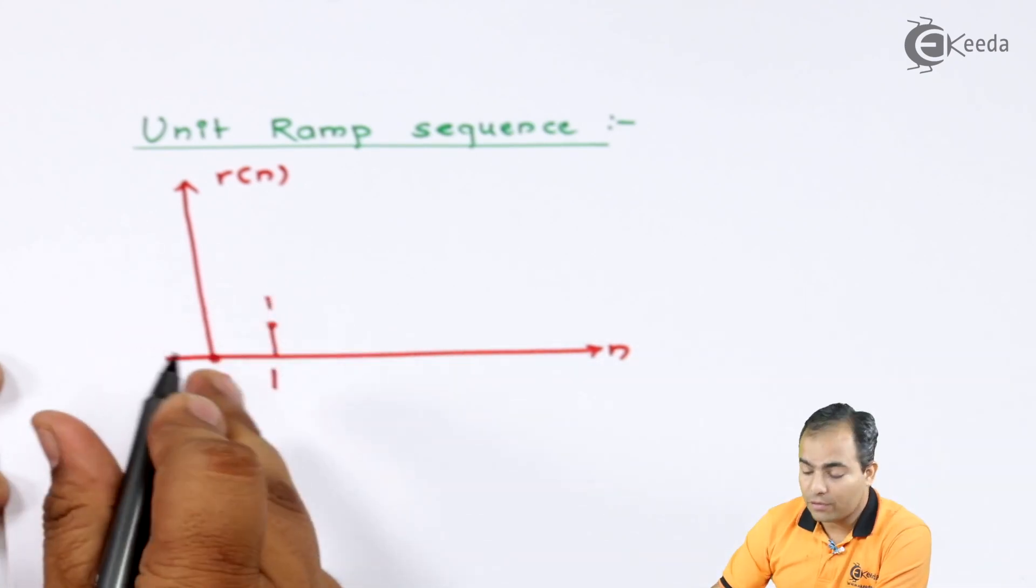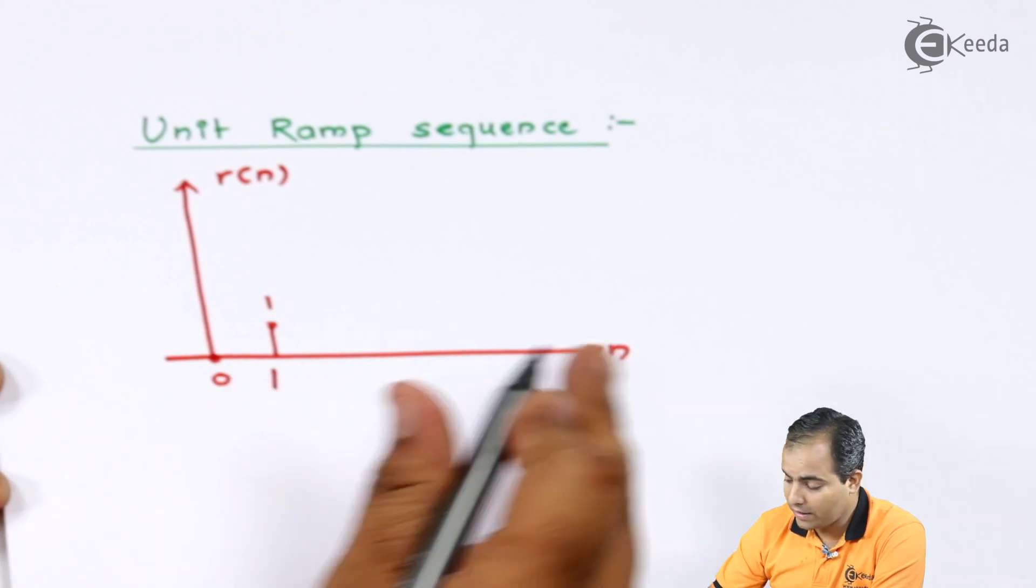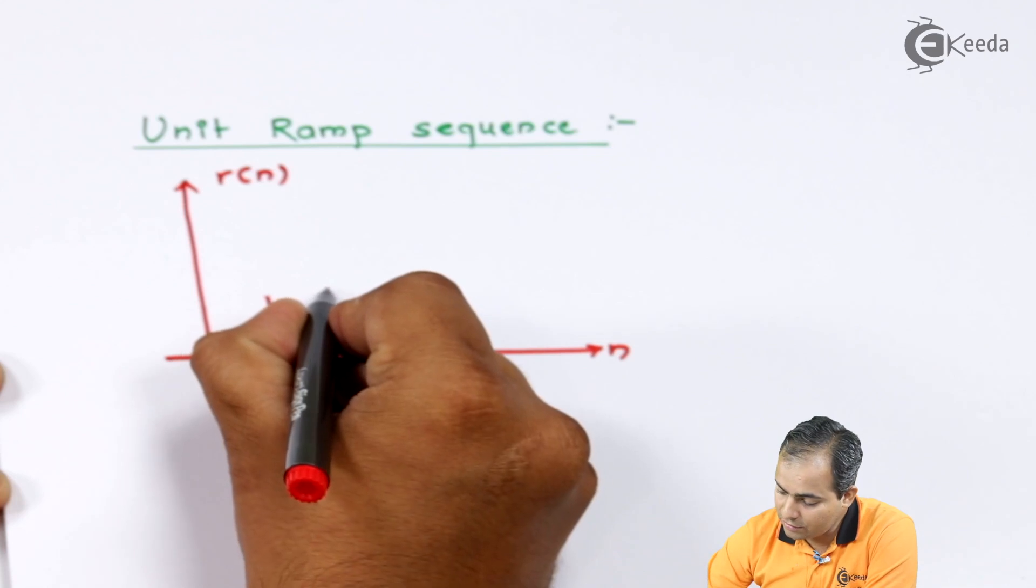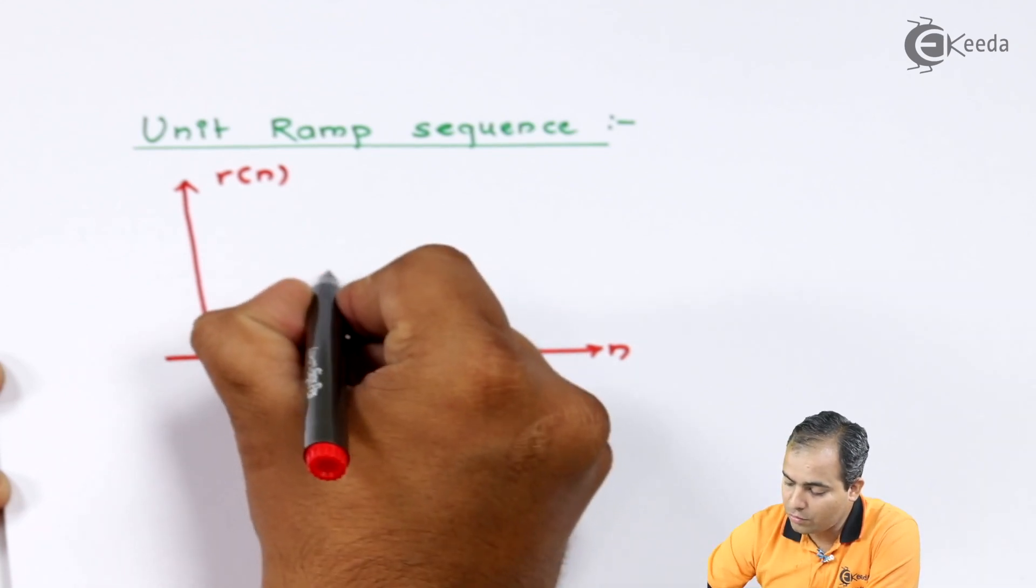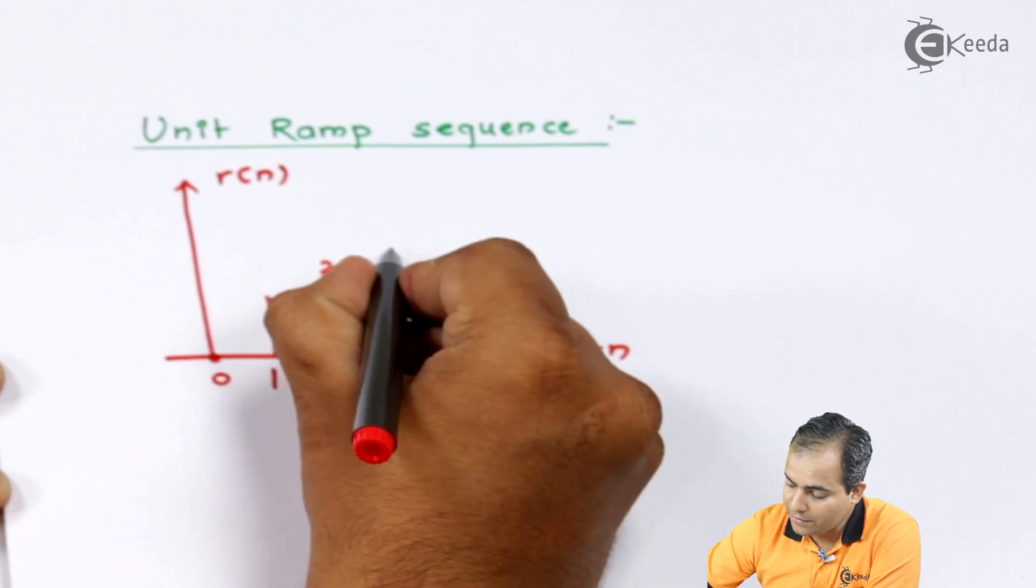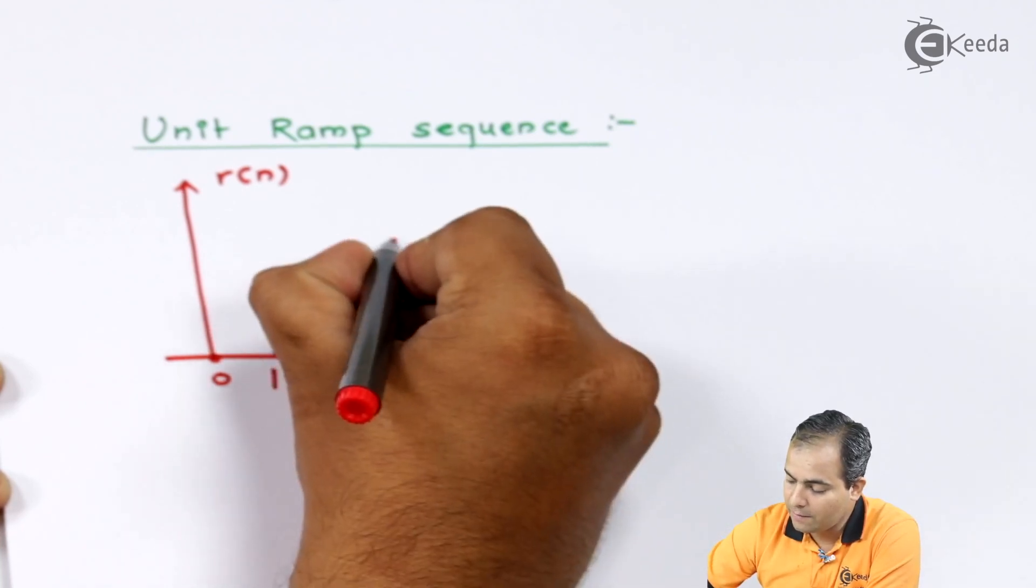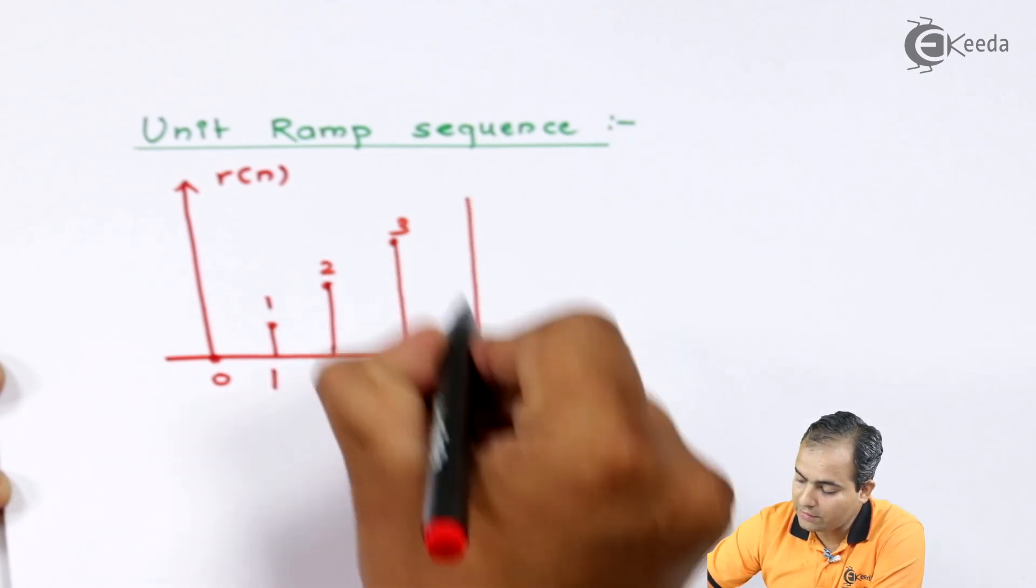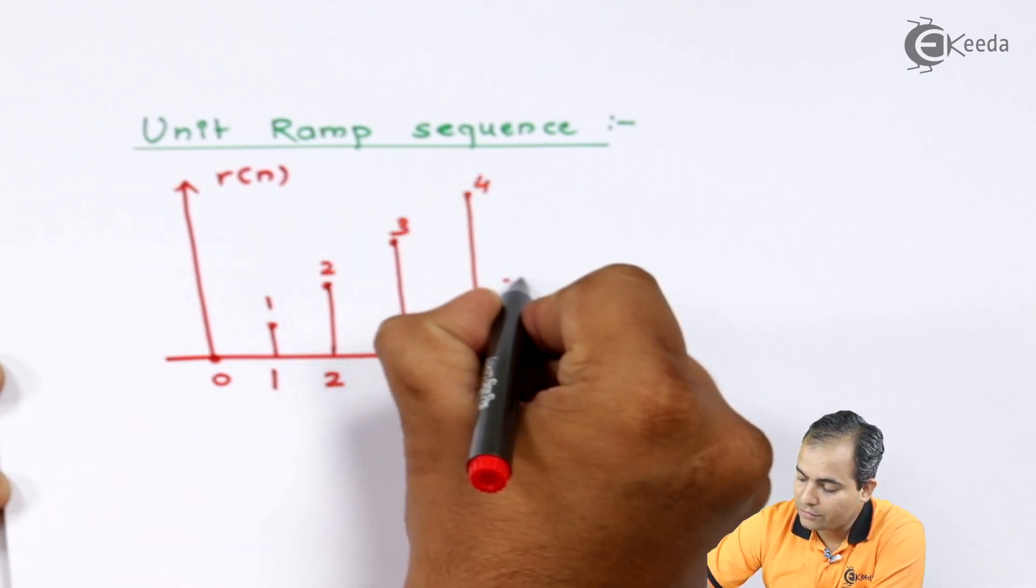So for the first sequence, at n equals 1, amplitude is 1. Next, similarly for n equals 2, amplitude is 2. For n equals 3, amplitude is 3, and for n equals 4, amplitude is 4, and so on.